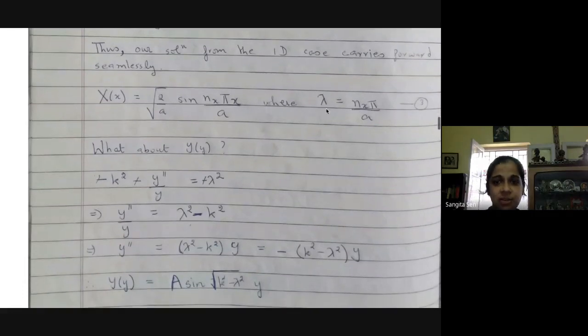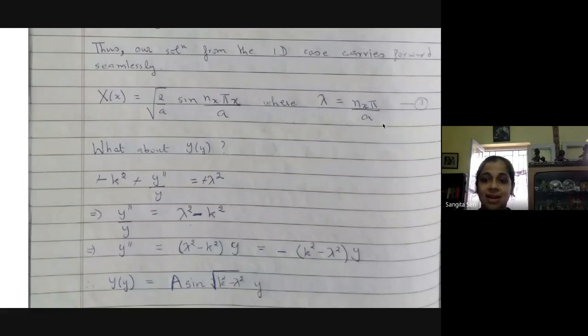I have obtained a condition and a value for lambda, and as you can see it is always real. So even though I allowed lambda to be anything, I find that lambda is actually real and positive.